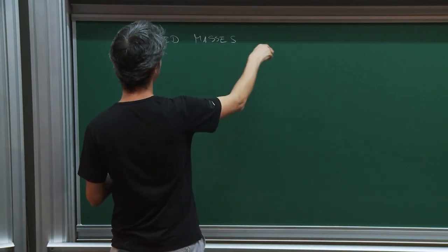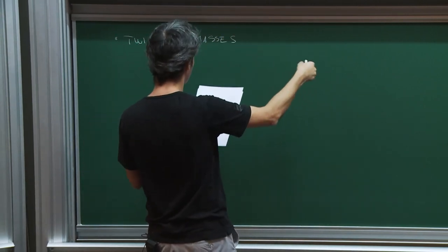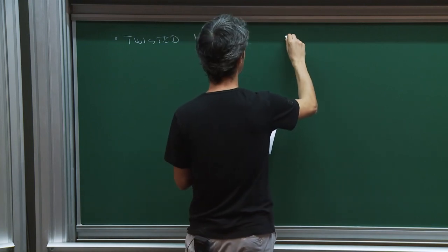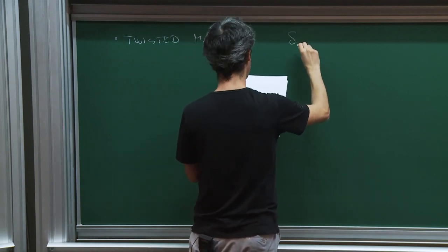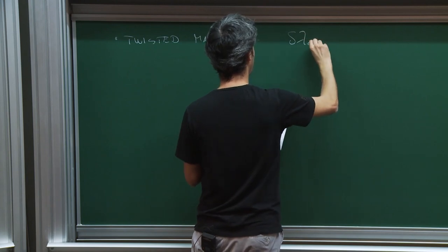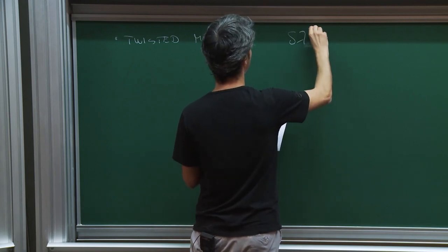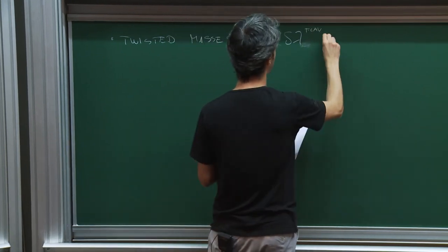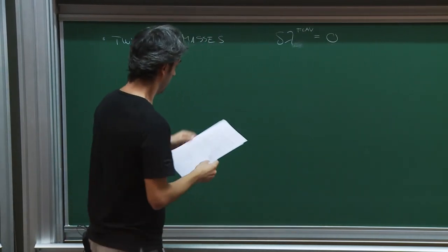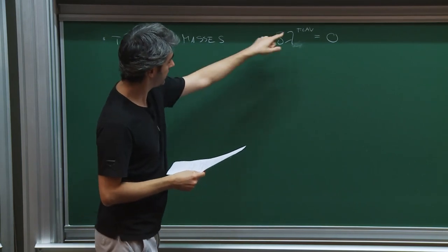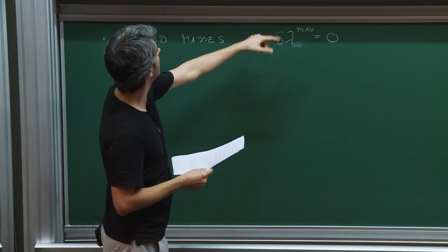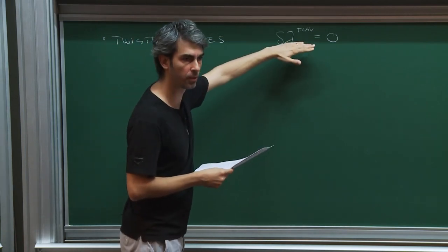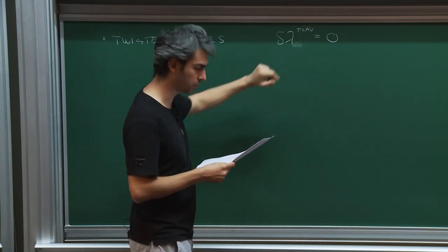As said, twisted masses correspond to giving expectation values to fields in the vector multiplet. In order to keep the theory supersymmetric, we have to impose that the variation of the gravity in the flavor background vector fields is zero. We will have to discuss this condition when we discuss the localization, so let me postpone for a few minutes what the solutions are.